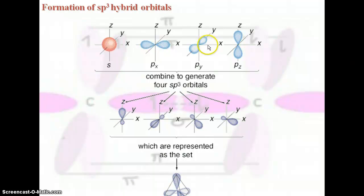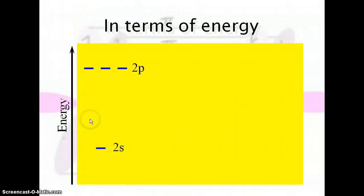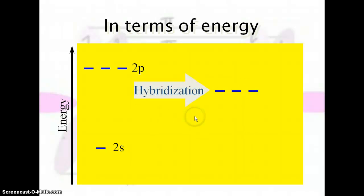If we take all of these and combine them into the hybridized orbitals that are formed when we bond, we get the correct geometry as predicted by VSEPR. In terms of energy, the 2s is lower energy than the 2p. The sp3 hybridized orbitals fall in between — higher energy than the 2s but lower energy than the 2p — so they are more favorable overall in terms of bonding.